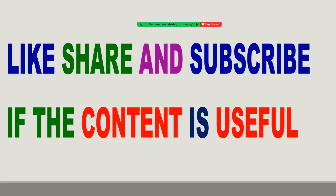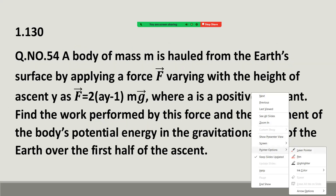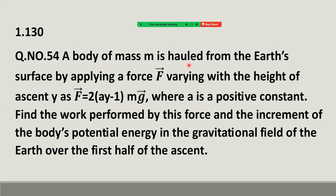Hi students. In this lecture, I am going to discuss problems from Irodov. Let us see the first one. A body of mass M is lifted from the earth's surface by applying a force F varying with the height of ascent y as F = 2(Ay - 1)Mg, where A is a positive constant. Find the work performed by this force and the increment of body's potential energy in the gravitational field of the earth over the first half of the ascent.